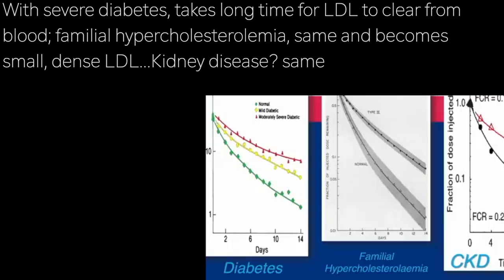The last condition is CKD — kidney disease — largely because those patients are insulin resistant, it takes a long time to clear LDL. They have small dense LDL, and that's what causes the cardiovascular disease seen at such a high rate in renal patients.